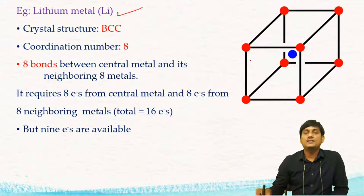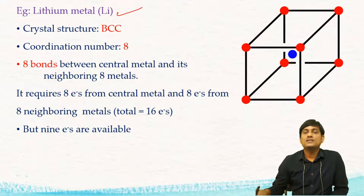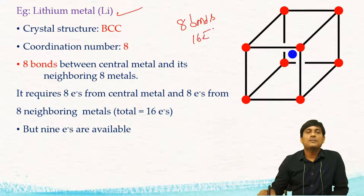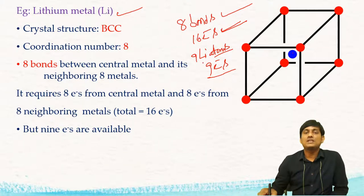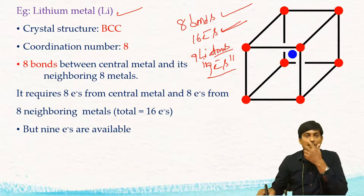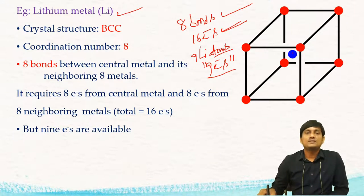According to valency bond theory, there are eight covalent bonds between the central lithium atom and the eight lithium atoms on corners. For this, there is a need of 16 electrons. But in this unit cell, there are nine lithium atoms, and nine lithium atoms can contribute only nine electrons. So the number of bonds are eight, requiring 16 electrons, but we only have nine valency electrons. Therefore, these are electron-deficient bonds — the number of bonds exceeds the number of available valency electrons.